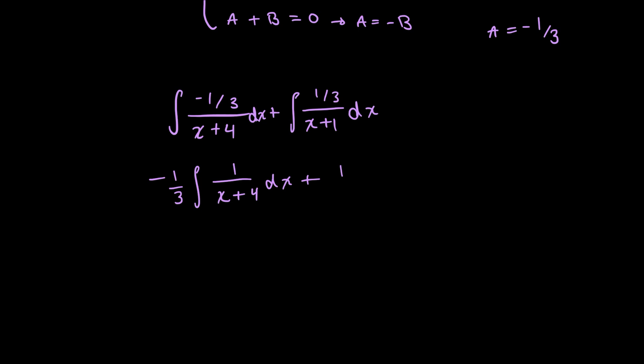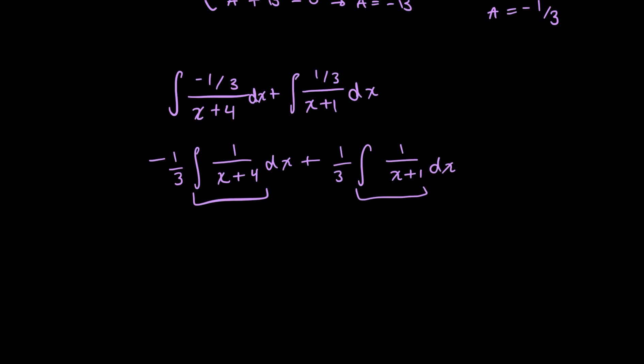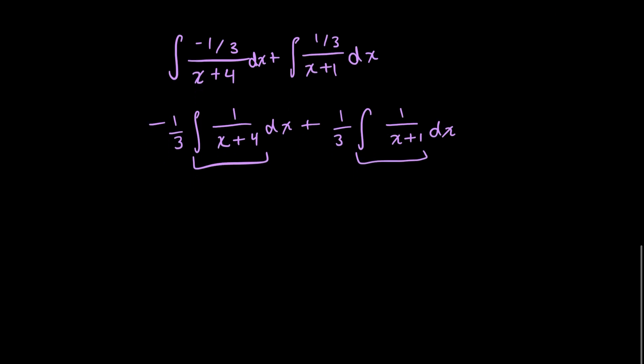And then for the second one, you just pull out that 1 third and you're left with 1 over x plus 1 dx. So for both of these, it's just a simple u substitution to figure out the antiderivative of this is. So you'd get 1 over u for both of them with their respective denominators in that u. So we know that the integral of 1 over u is just ln of whatever that u is.